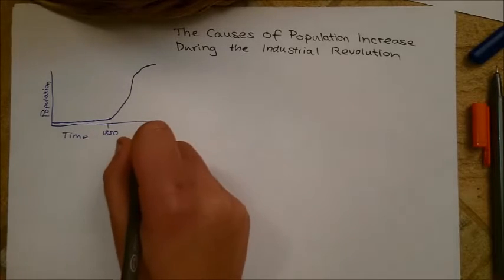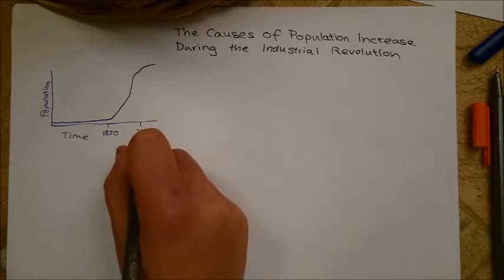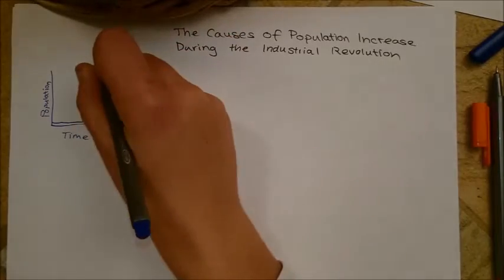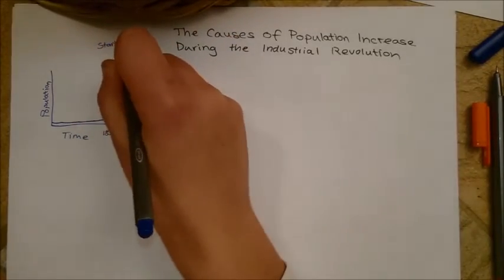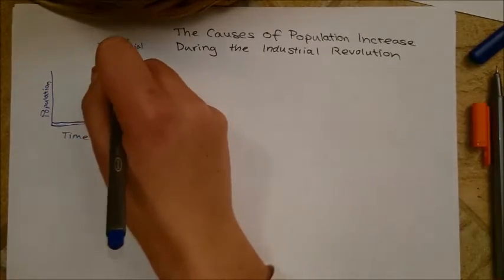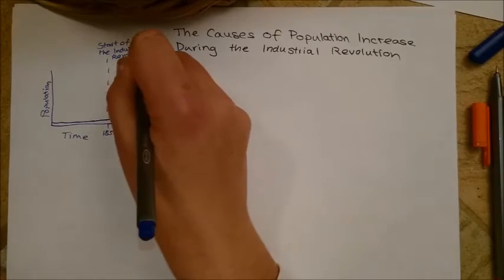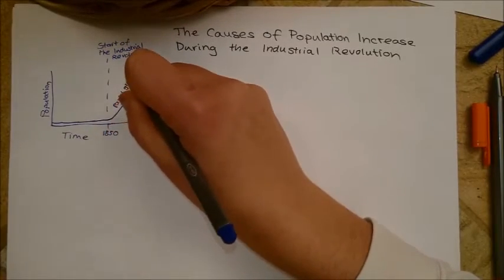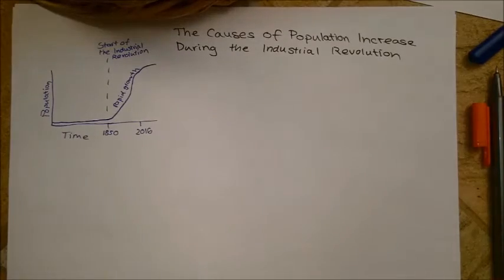Only in 1850, around the start of the industrial revolution, did the population begin to grow rapidly, up to 7 billion in 2016. Population is projected to continue to grow till 11 billion by the end of the century.